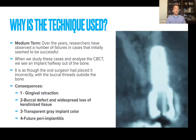In the medium term, over the years researchers have shown that there are a number of failures in cases that initially seem to be quite successful. We see especially on CBCT scans that an implant can be halfway out of the bone and still functioning without issue. The question arises: was this the fault of the oral surgeon placing the implant incorrectly, or was the implant placed correctly and something has changed over time? There are a number of consequences that come with this.